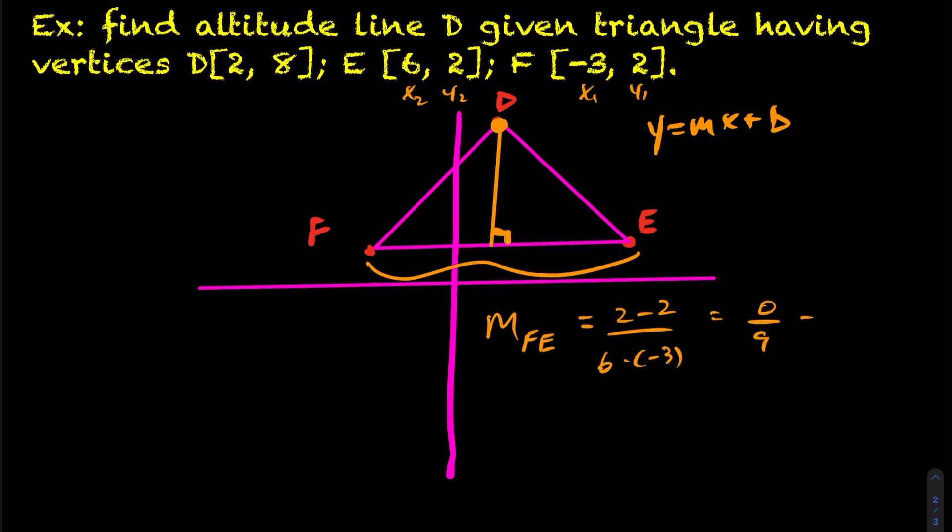You actually end up getting 0. So the slope of this line, as it appears to be, and we should have probably guessed that, it was a flat line to begin with. So yeah, the slope is 0.